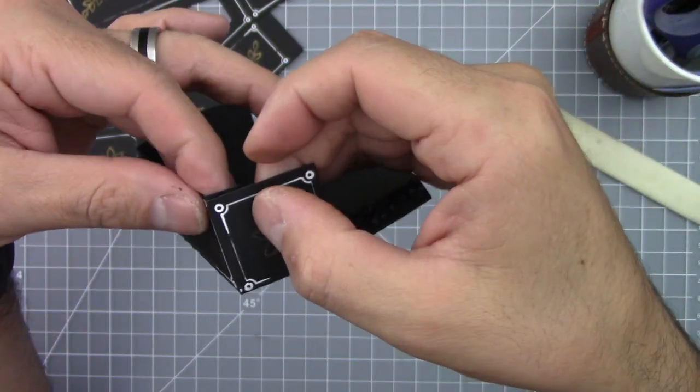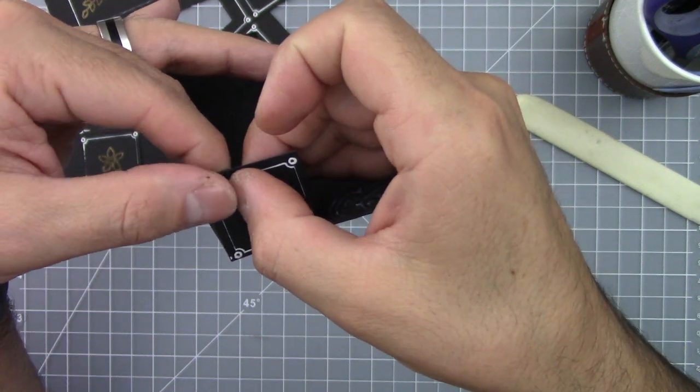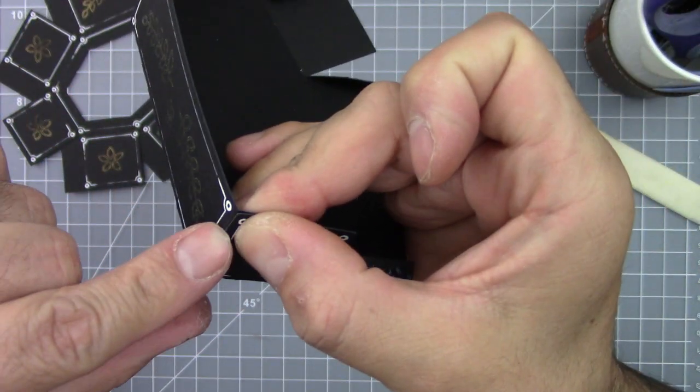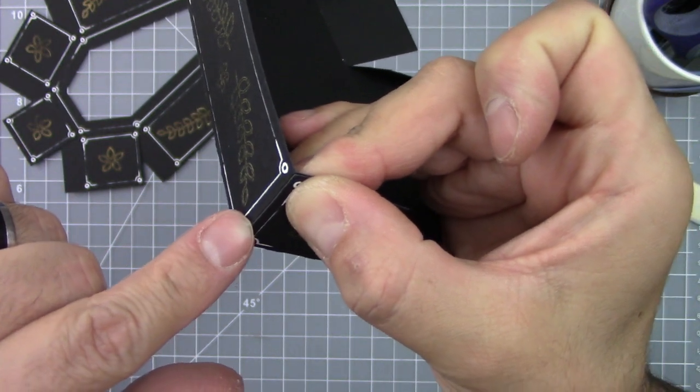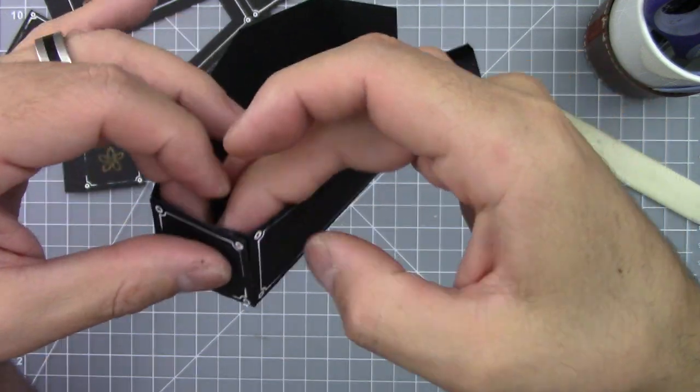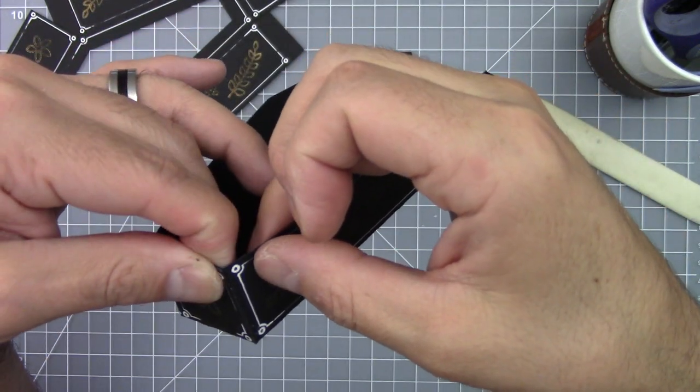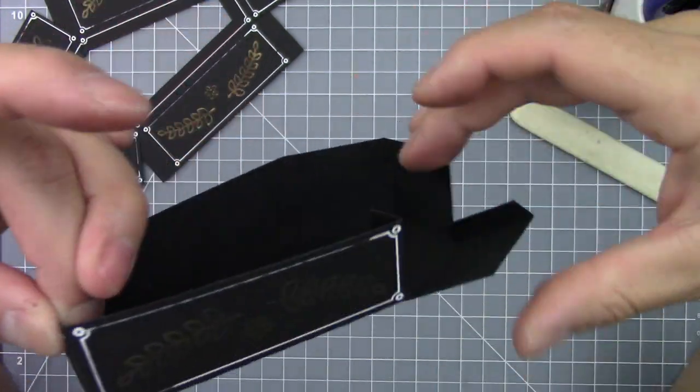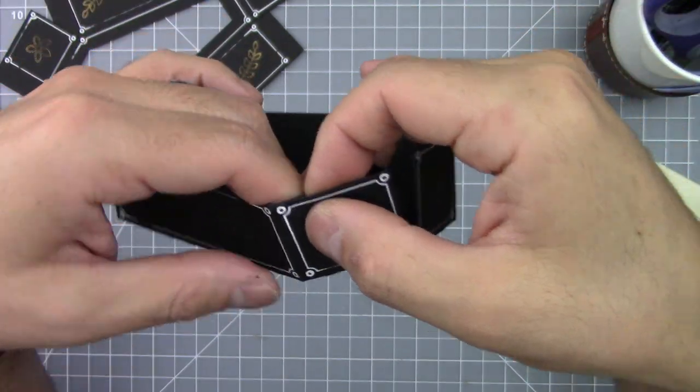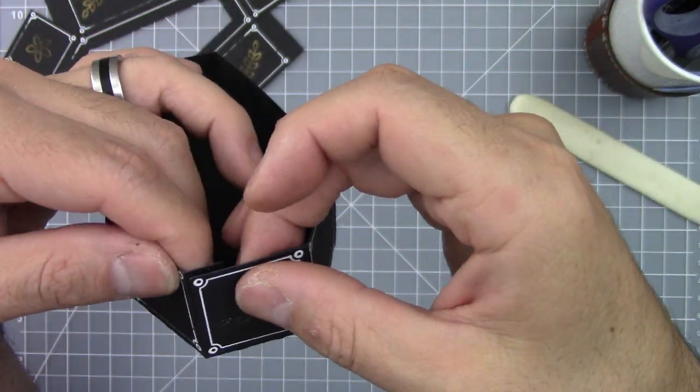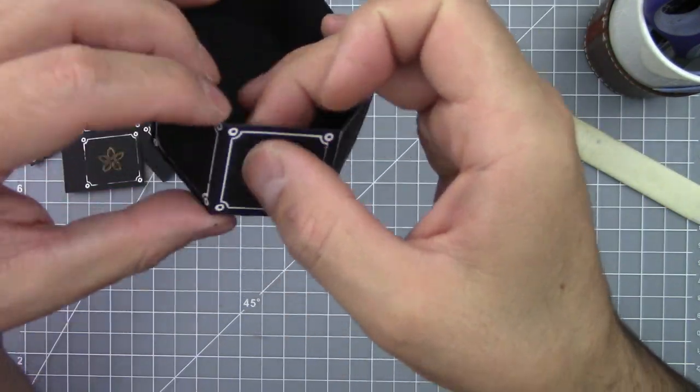If you want, you can also use some sewing clips or paper clips to hold your tabs together. And remember to match the edge with the fold. Finish gluing all the tabs and your base is ready.